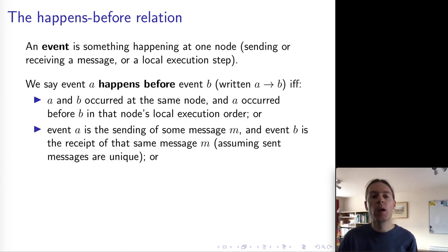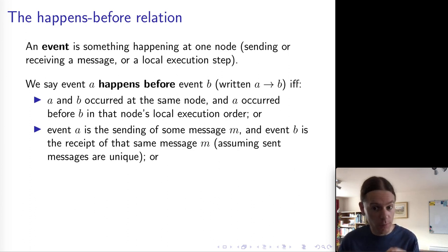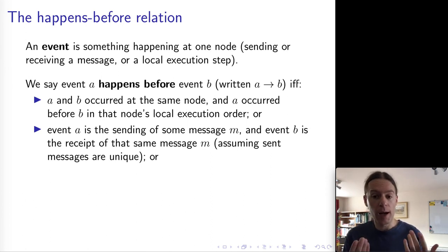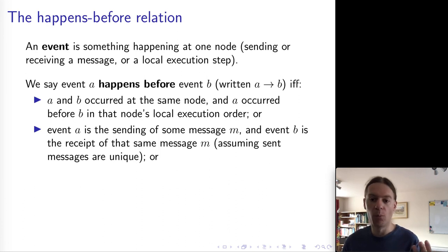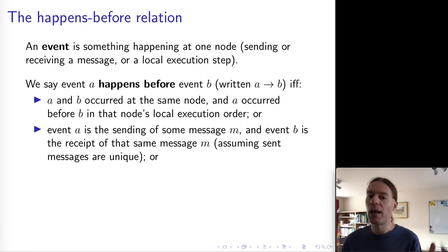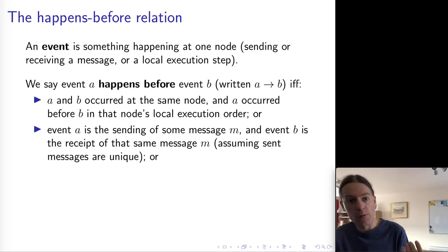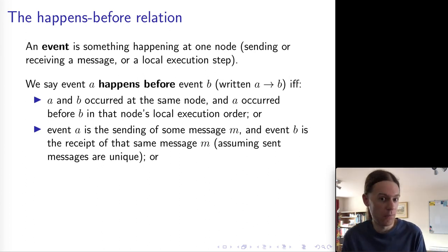Second, A happened before B if A is the event that a certain message M was sent and B is the event that this same message was received. For this to be unambiguous, we assume messages are unique — we can achieve this by attaching a sequence number and node identifier, or a long random number. This makes sense because a message can only be received after it has been sent, so the sending happens before the receipt. Third, if we can find some event C such that A happened before C and C happened before B, then A happened before B — this is simply the transitive closure, extending the relation into what is called a partial order.